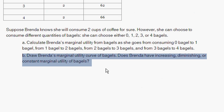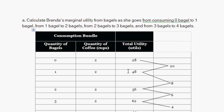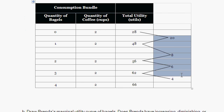So now in part B — that was part A, just the marginal utility column I added. Part B asks: draw Brenda's marginal utility curve of bagels. Does Brenda have increasing, diminishing, or constant marginal utility of bagels? Let's answer the second part first.